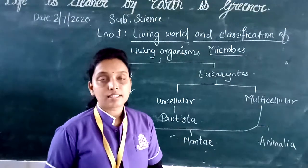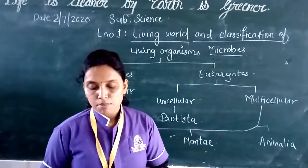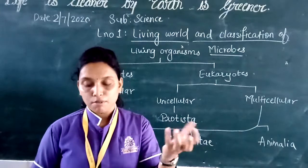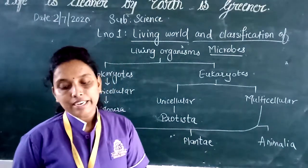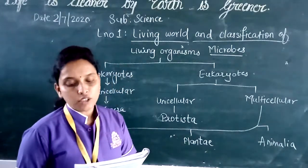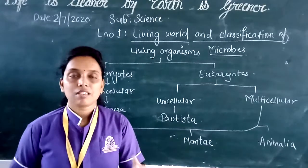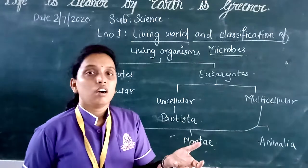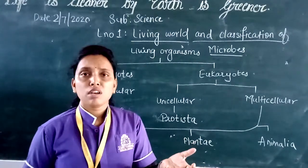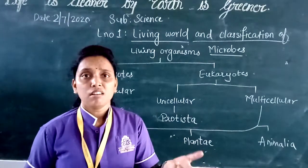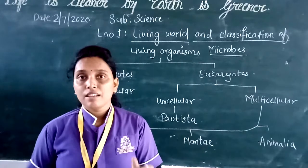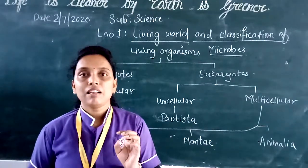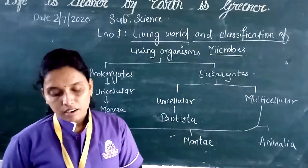Haeckel in 1866 considered three kingdoms: Protista, Plants, and Animals. Protista is a group of organisms. In 1925, Chatton created two groups: Prokaryotes and Eukaryotes. Prokaryotes are organisms that don't have a well-defined nucleus or cell organelles. Eukaryotes have a well-defined nucleus with cell organelles.